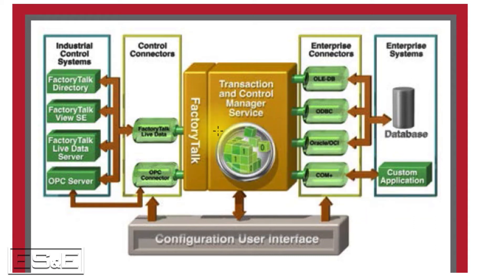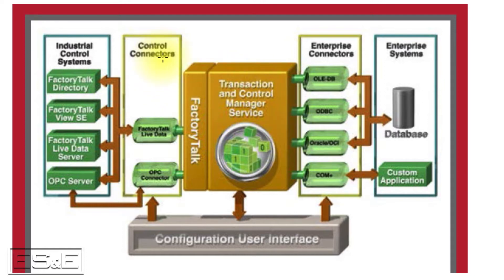The middle piece is where you take the control connector and map that data into the enterprise connector. One important thing to make clear is that this product is bi-directional. We can take data from the control connectors and push it into enterprise connectors such as a relational database, or we can take data from enterprise connectors and push it down to the control connectors.